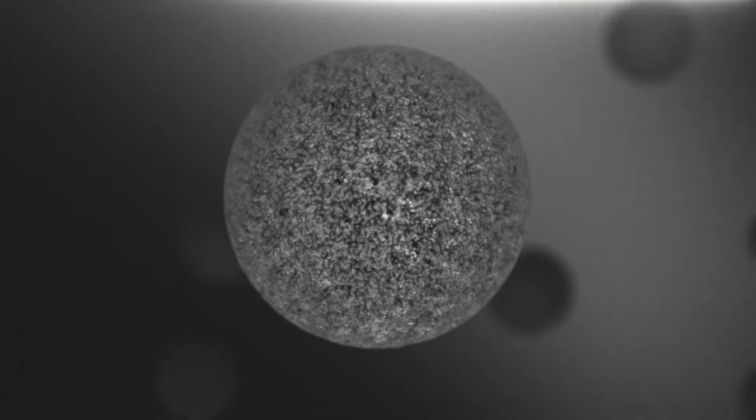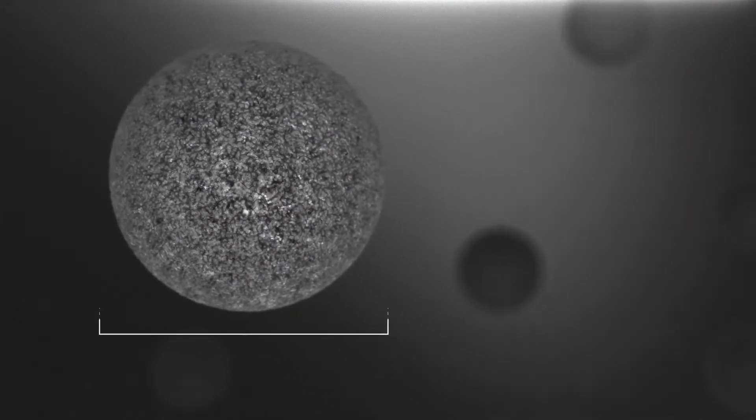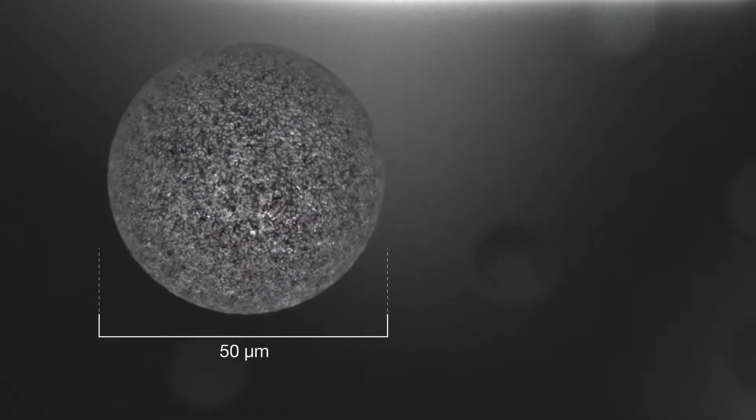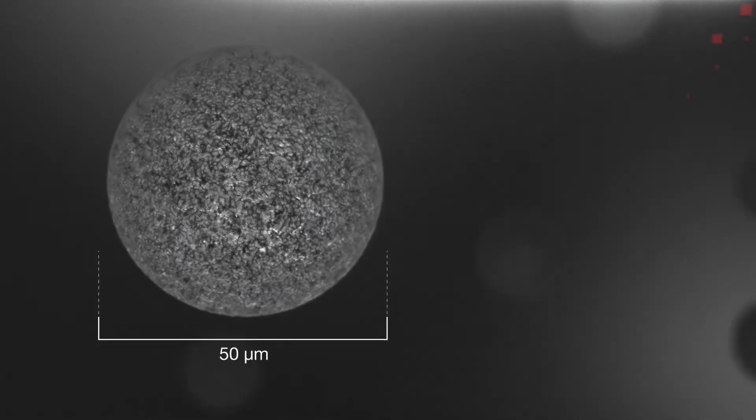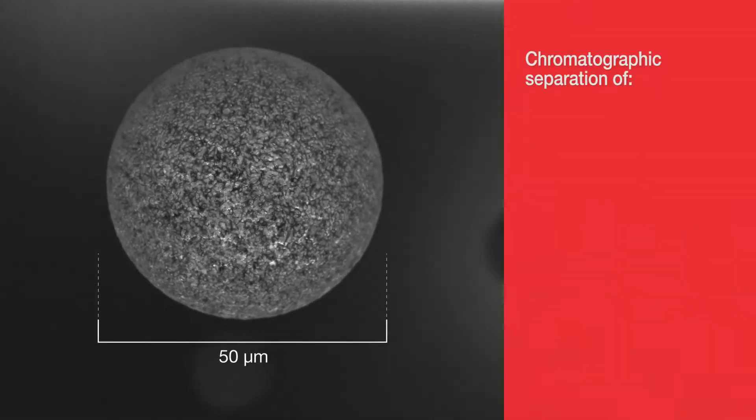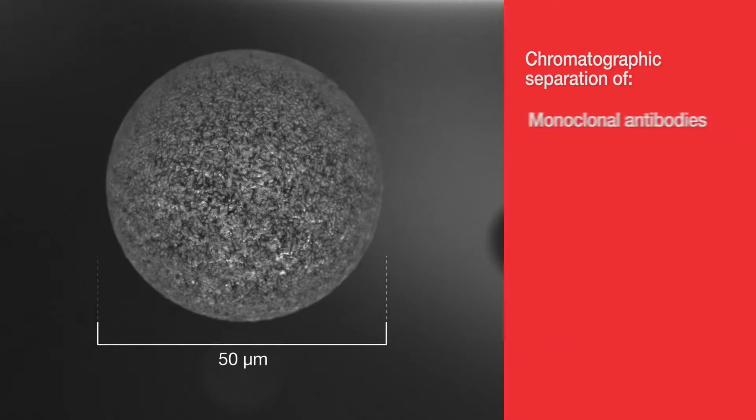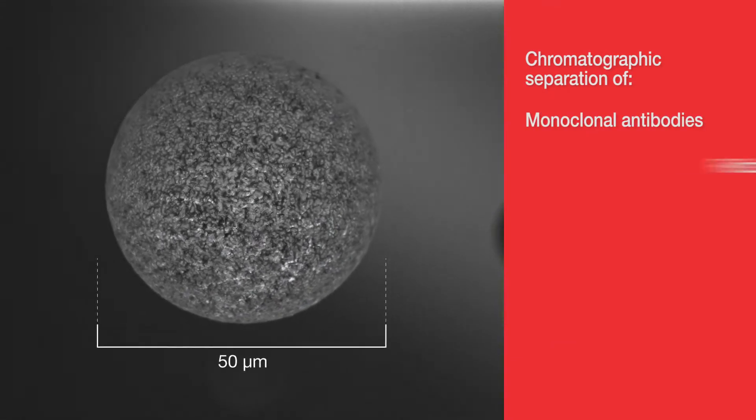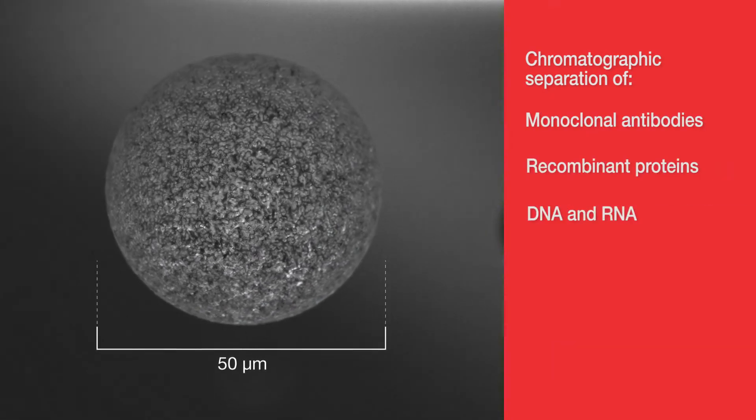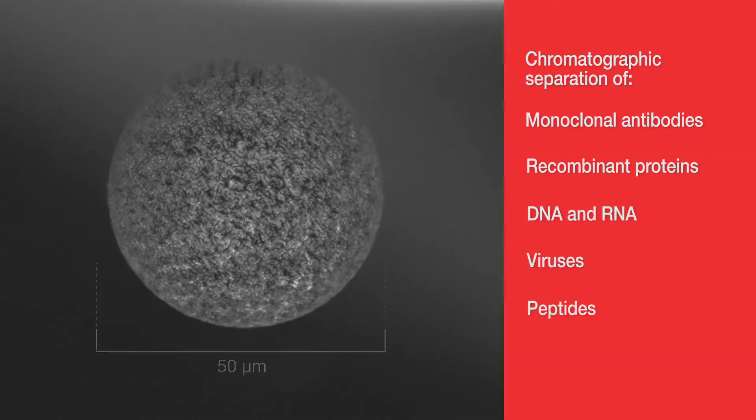Thermoscientific Porose chromatography resins are 50 micron polymeric beads that are chemically stable and inert. They can be used for the chromatographic separation of biomolecules, including monoclonal antibodies, recombinant proteins, DNA and RNA, viruses, and peptides.